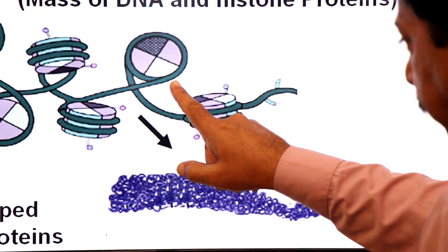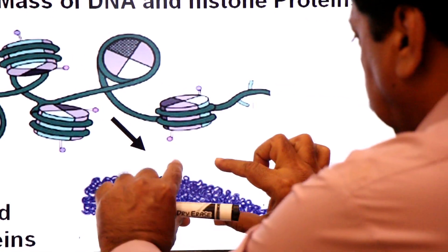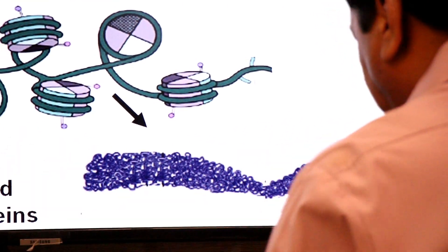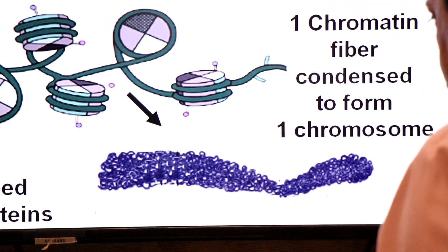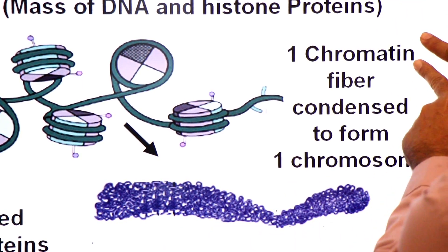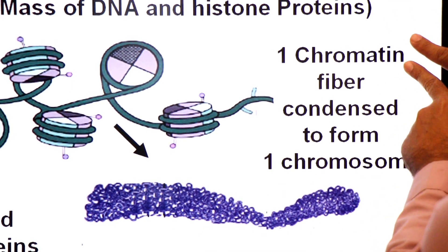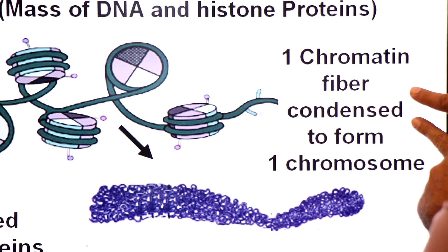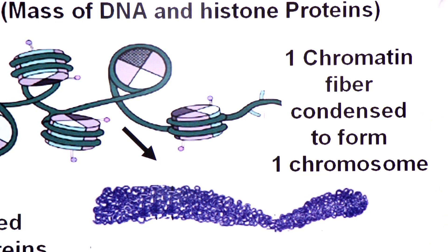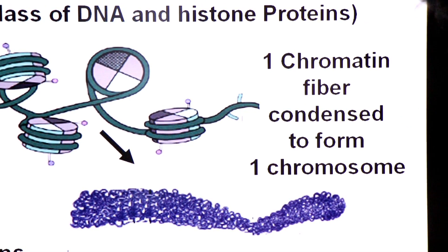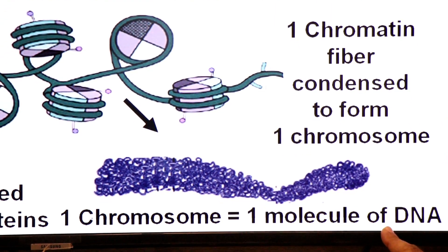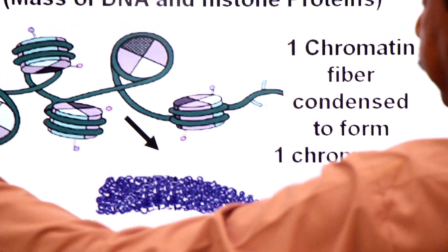This chromatin fiber further condenses to form a thicker thread-like structure called chromosome. One chromatin fiber coils and super-coils to form one chromosome. Remember, one chromosome is one molecule of DNA.